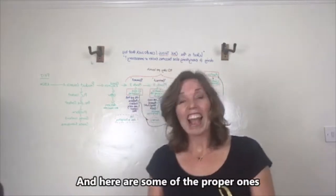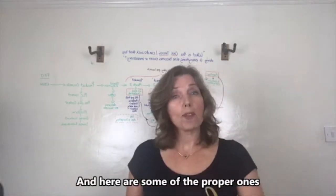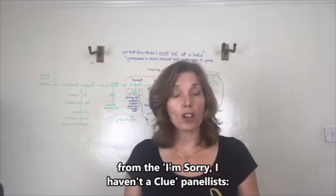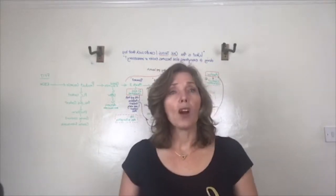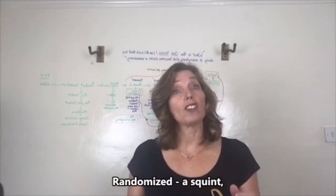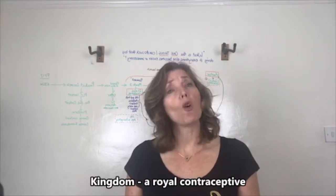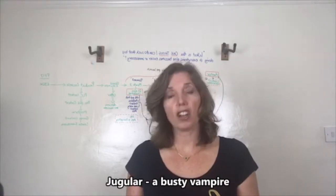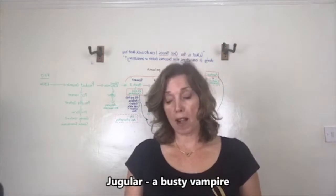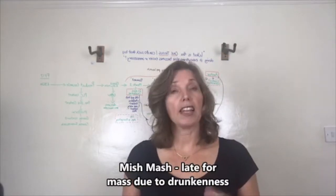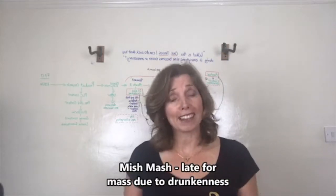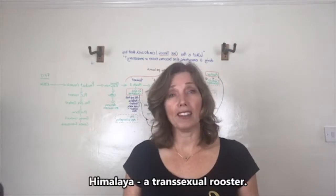And here are some of the proper ones from 'I'm Sorry I Haven't Got a Clue' panelists: Randomize: a squint. Kingdom: a royal contraceptive. Jugular: a busty vampire. Mishmash: late for mass due to drunkenness. Himalaya: a transsexual rooster.